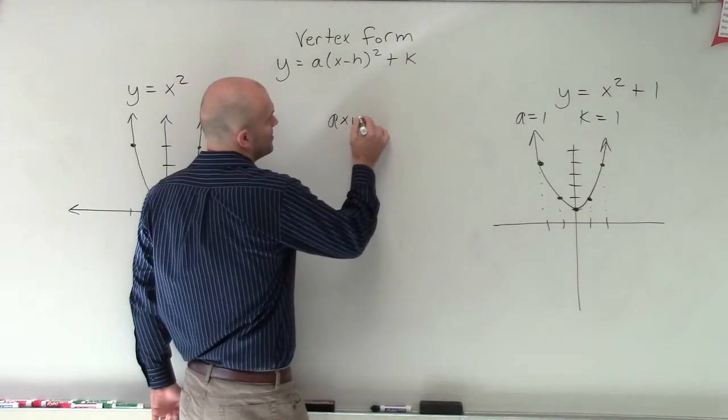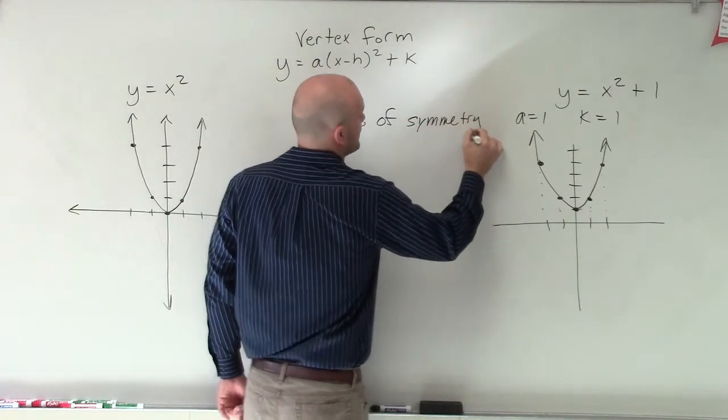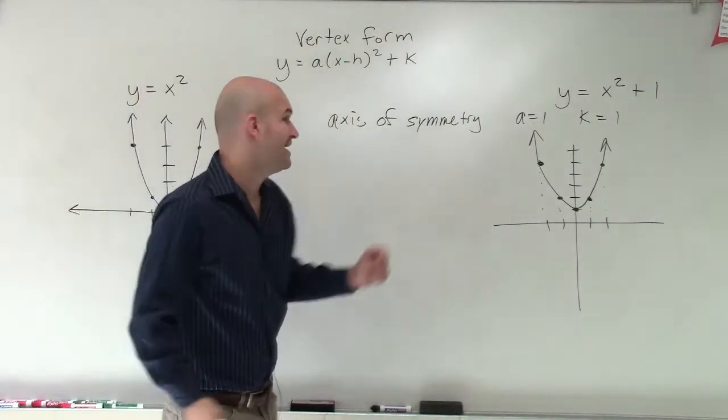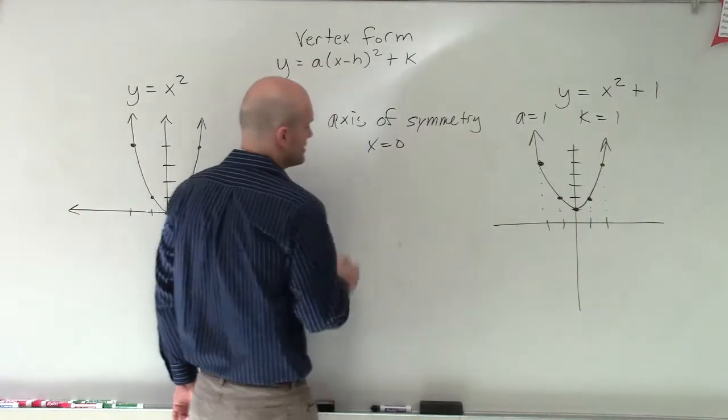Now let's just go and look at some of the points, axis of symmetry, and some other important points that we have. Well, the axis of symmetry, remember, is going to be the line that's going to reflect our graphs. And since these graphs have not shifted left or right at all, my axis of symmetry is still going to be 0.